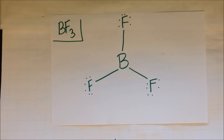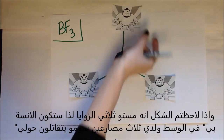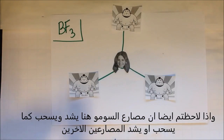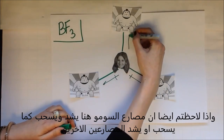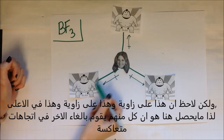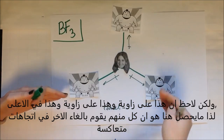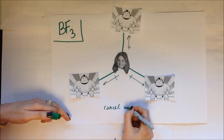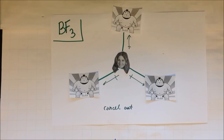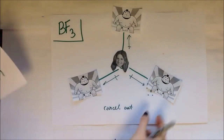Next is BF₃, whose shape is trigonal planar. I've got Miss B in the middle, and now three sumo wrestlers are fighting over me. Each sumo wrestler pulls just as much as the others — they're clearly more electronegative, leaving me a little more positive. One is on an angle, another is on an angle, and one is going up. All of these cancel each other out — the two on an angle cancel the one going up. So once again, this is a nonpolar molecule. These two on the angle even out the one above.